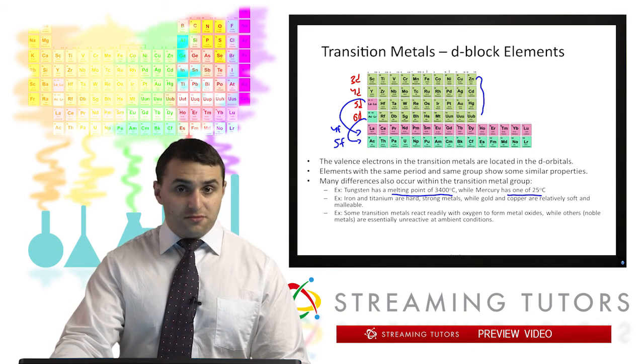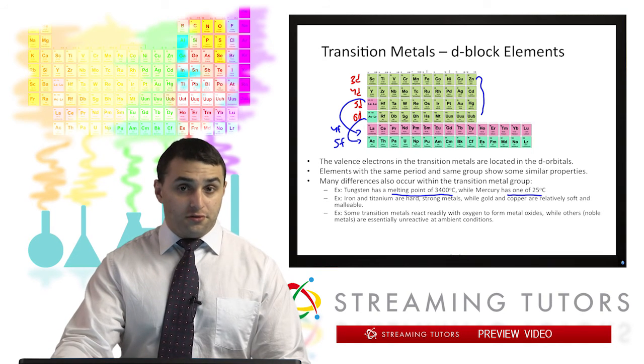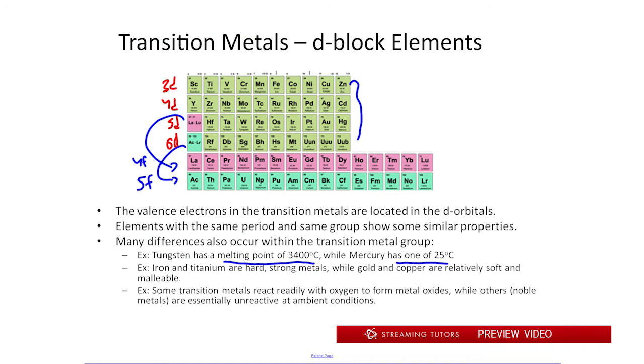And then others have different properties of reactivity. For example, some transition metals react readily with oxygen, and then there are some called noble metals that barely react to the oxygen at all. Some of those noble metals are iridium, platinum, gold is considered one, palladium, rhenium. Those in that general area tend to be non-reactive.